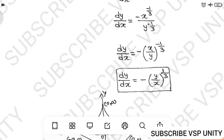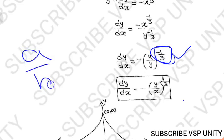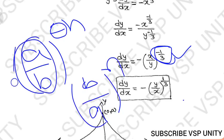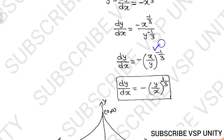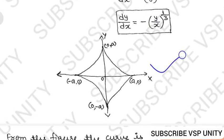Dividing both sides by y^(−1/3), we get dy/dx = −x^(−1/3)/y^(−1/3). Using the rule that (a/b)^(−n) = (b/a)^n, this simplifies to dy/dx = −(y/x)^(1/3).